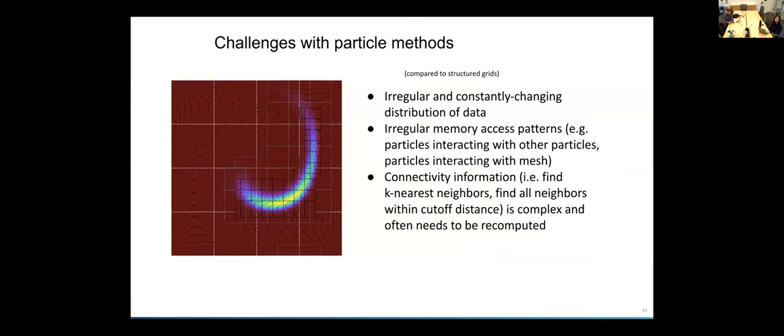Some disadvantages or challenges, compared to structured grids, are that you have this irregular and also dynamic data distribution. You also have irregular memory access patterns. For example, when you have particles interacting with other particles, or particles interacting with the mesh data, you need to do something in order to establish regularity. And also connectivity information, for example, finding your k-nearest neighbor particles, or finding all the neighbors within a certain distance of each particle, is more complicated than in a structured grid, and you often need to recompute that many times throughout your simulation.